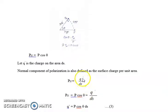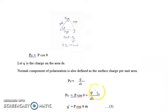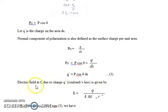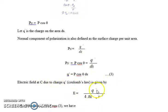The charge here is Q' in that area dS. So Pn is Q'/dS, or Pn = P cosθ = Q'/dS, which gives Q' = P cosθ · dS. Then what is the electric field at the point C? Our aim is to find out the internal electric field at the point C. By Coulomb's law, the electric field at C due to charge Q' is E = Q' / (4πε₀r²).